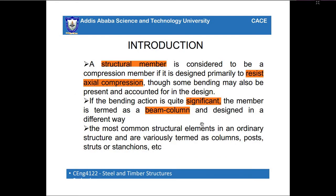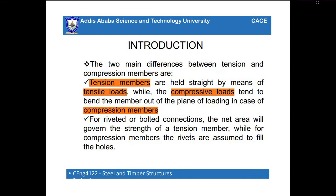A structural member is considered to be a compression member if it is designed primarily to resist only axial compression force. When a member resists only axial compression, it is known as a compression member. If bending action is quite significant, the member is termed a beam-column and designed in a different way. The most common structural elements are columns, posts, struts, and stanchions.